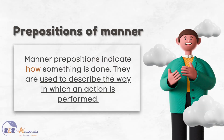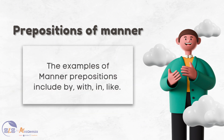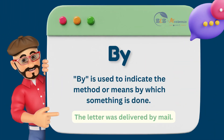The next type of prepositions are the manner prepositions. Manner prepositions indicate how something is done and are used to describe the way in which an action is performed. Examples of manner prepositions include: by, with, in, and like. 'By' is used to indicate the method or means by which something is done. For example, 'the letter was delivered by mail' means that the letter was sent through the postal service.